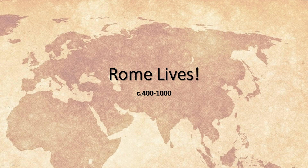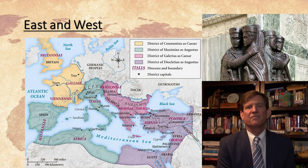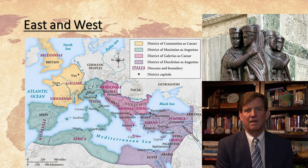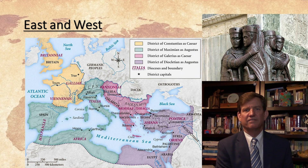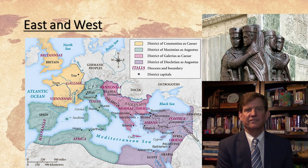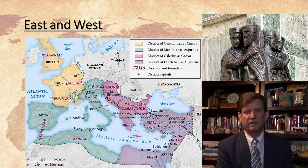Rome lives, 400 to 1,000 of the Common Era. Around 300 of the Common Era, the Roman Emperor Diocletian decided to re-divide his empire, to reorganize it, to provide it with stability.